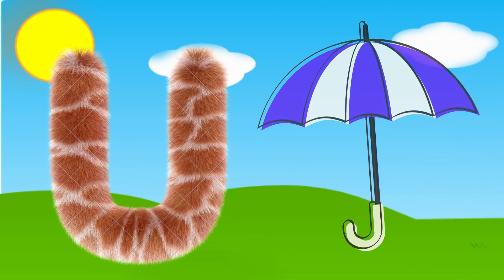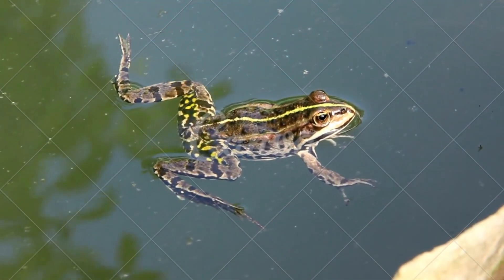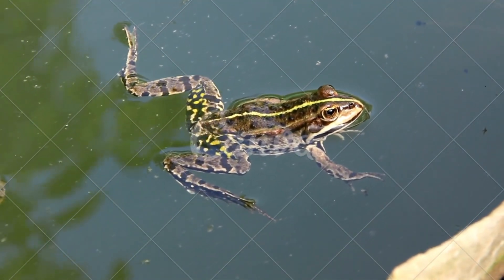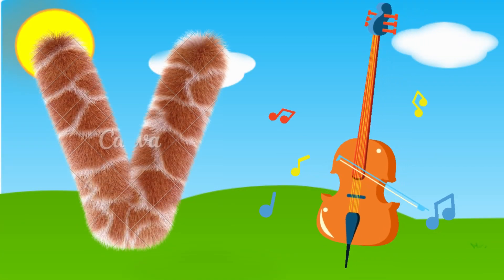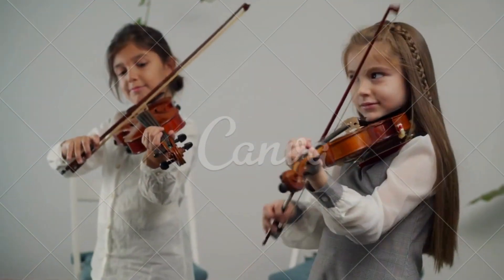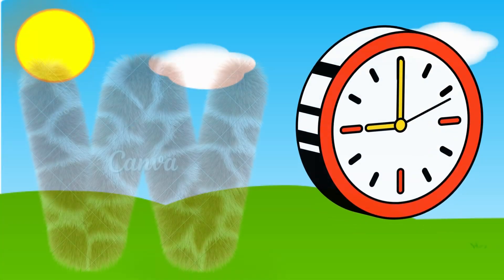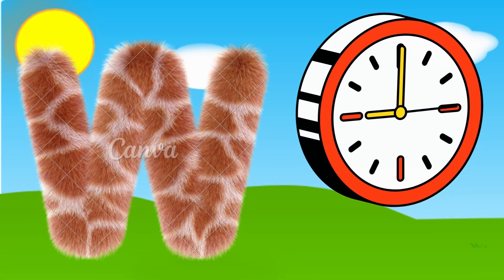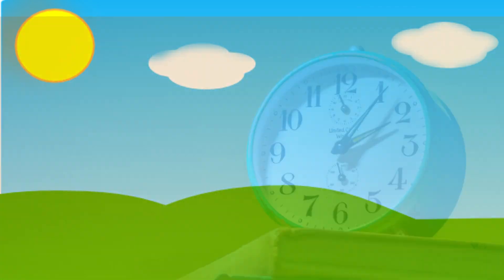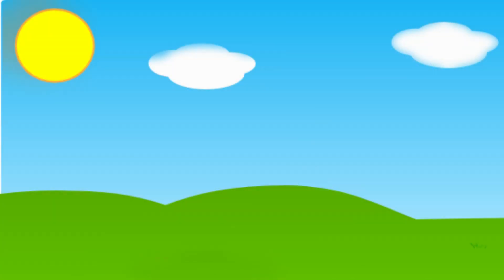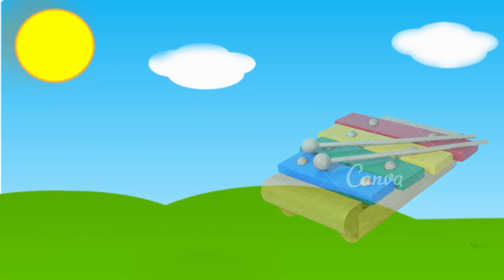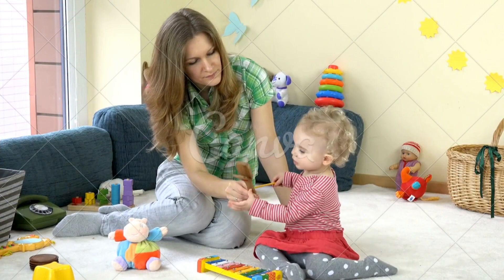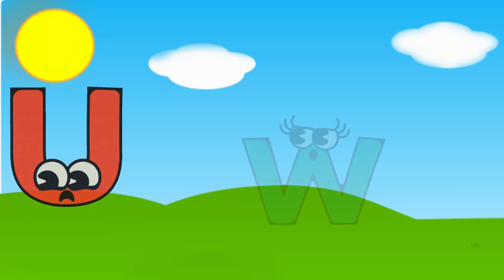U is for Umbrella, U-U-Umbrella. V is for Violin, V-V-Violin. W is for Watch, W-W-Watch. X is for Xylophone, X-X-Xylophone.